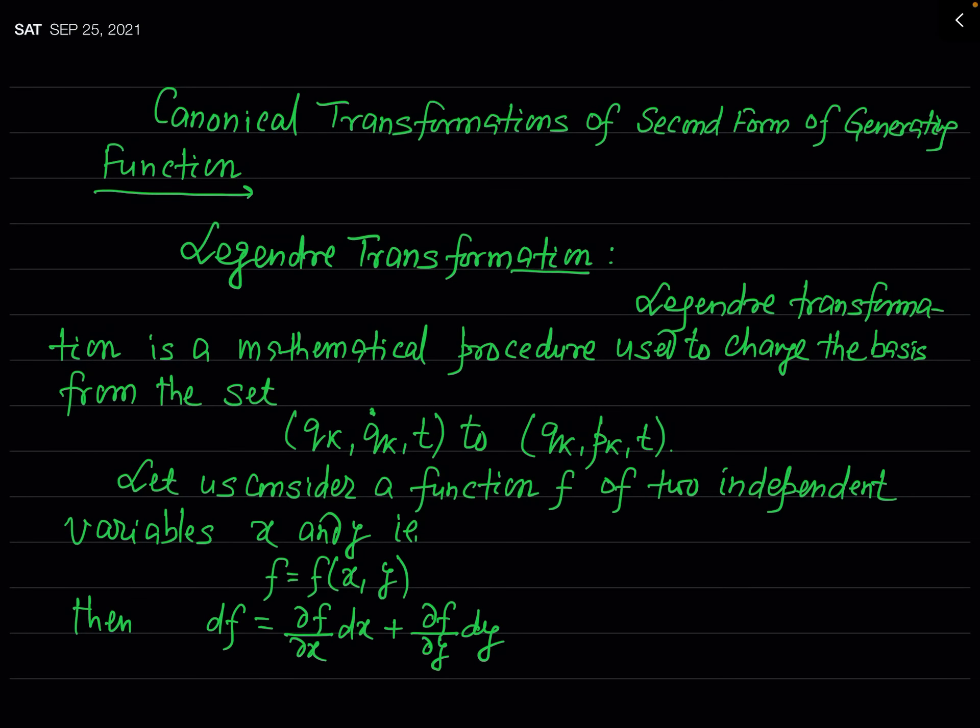In the previous lecture we covered the transformation equations for the canonical transformation of generating function of the first form. In this lecture we will see the canonical transformation of the second form of the generating function. To find the canonical transformation equation for the second form, we need knowledge of a particular transformation called the Legendre transformation. So let us see what is the Legendre transformation.